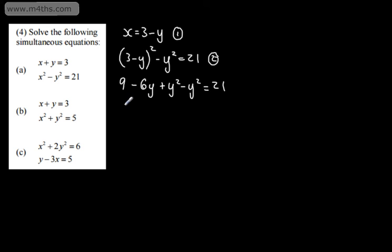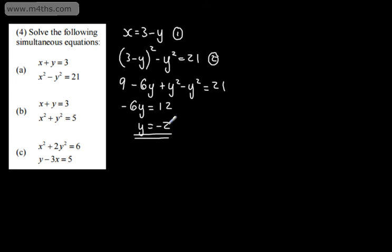From here, I can see the y squared terms cancel, so I have negative 6y. Subtracting 9 from both sides gives negative 6y equals 12. Dividing both sides by negative 6, y is equal to negative 2. Those squared terms cancel out. Now we need to solve for x: x equals 3 minus y, so x equals 3 minus negative 2, and x equals 5. Nice and straightforward.